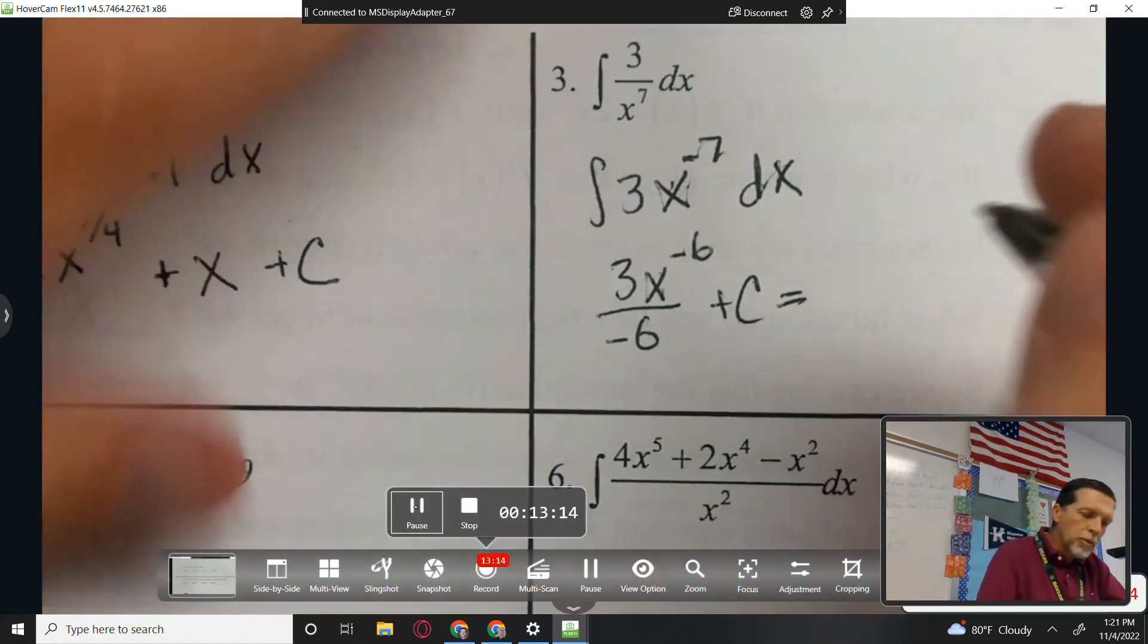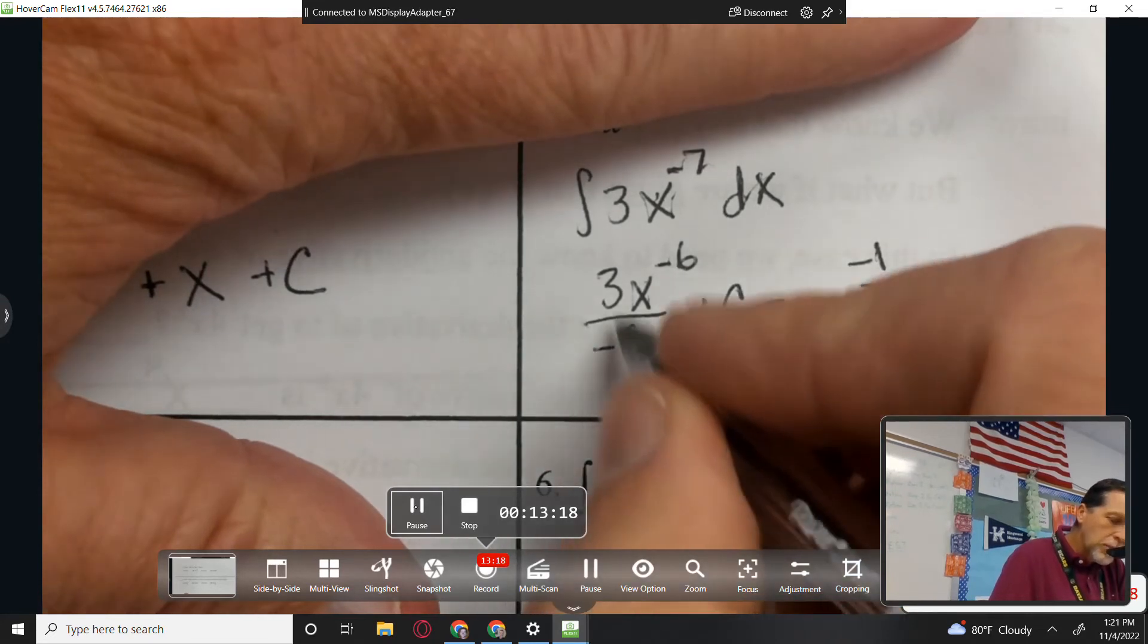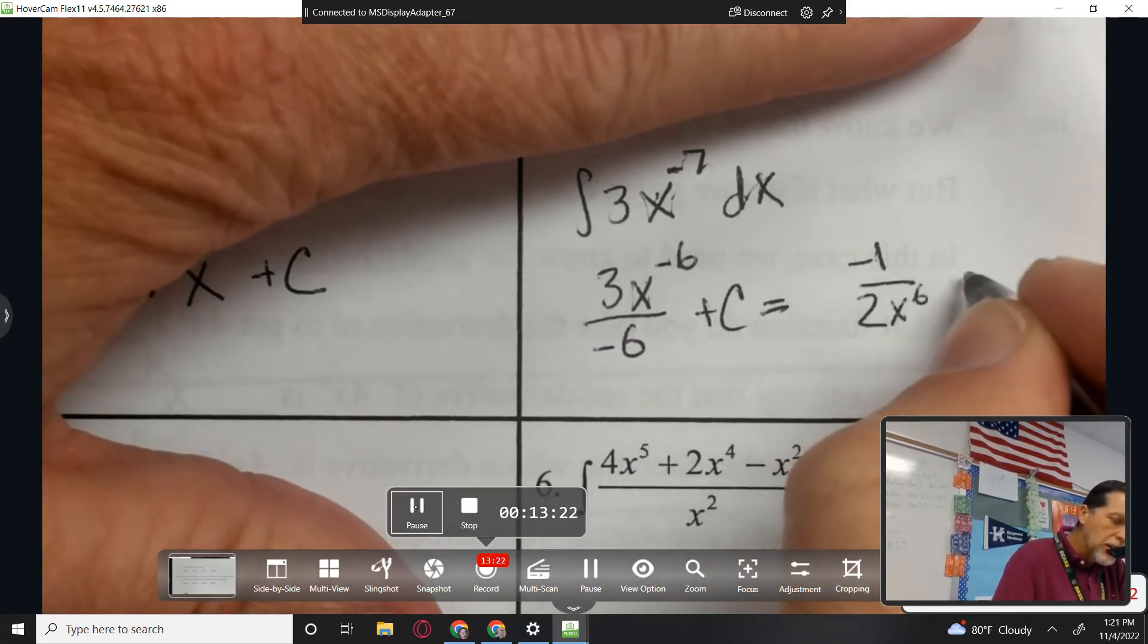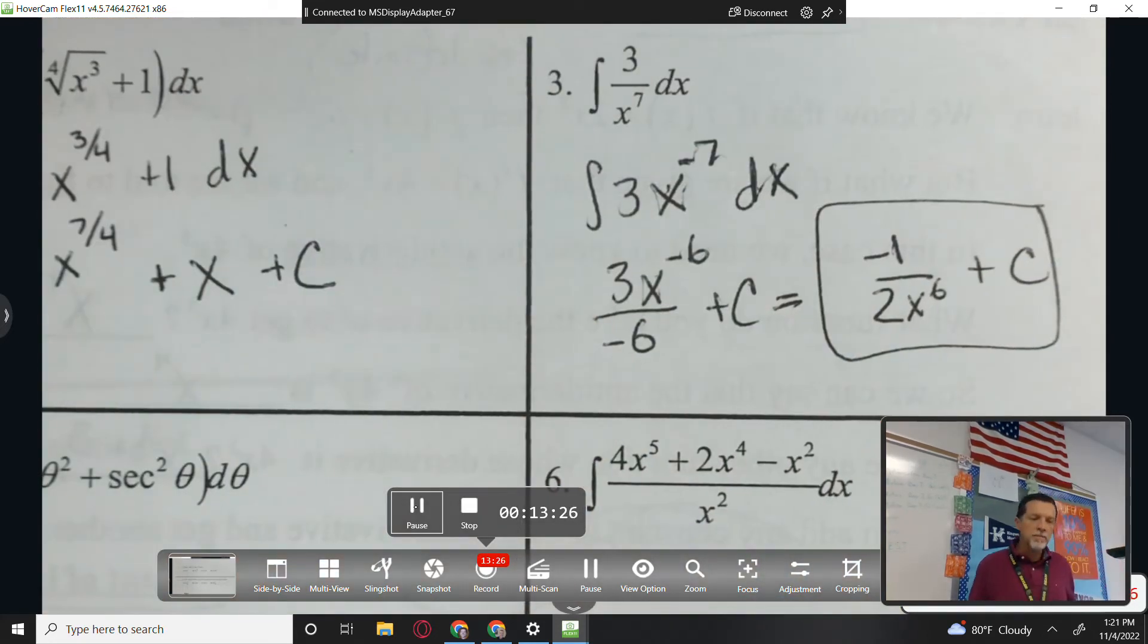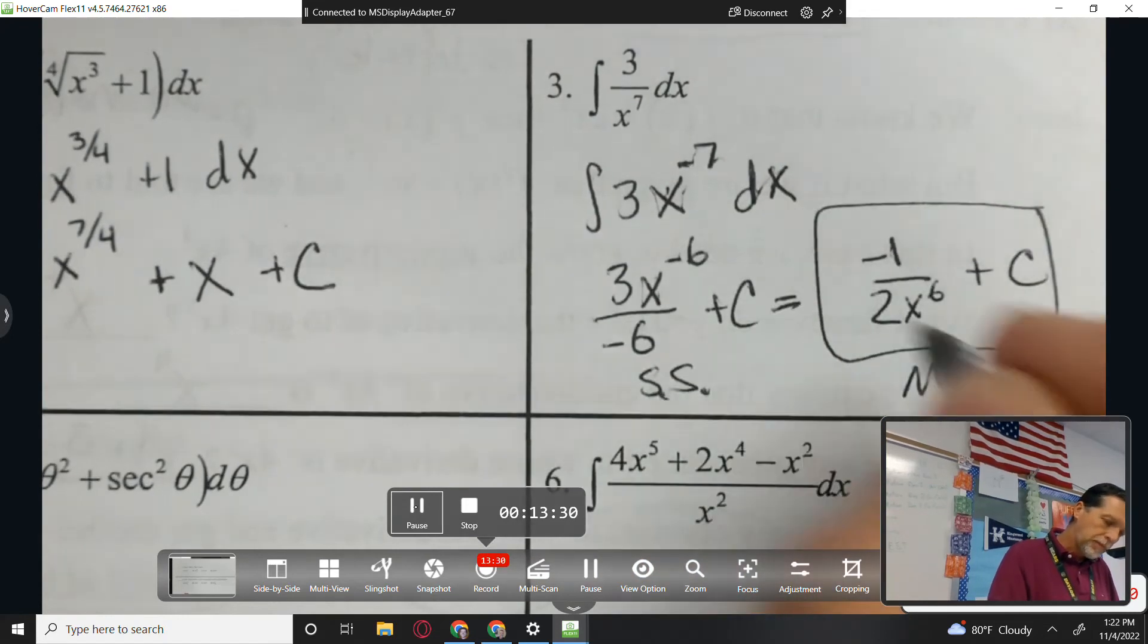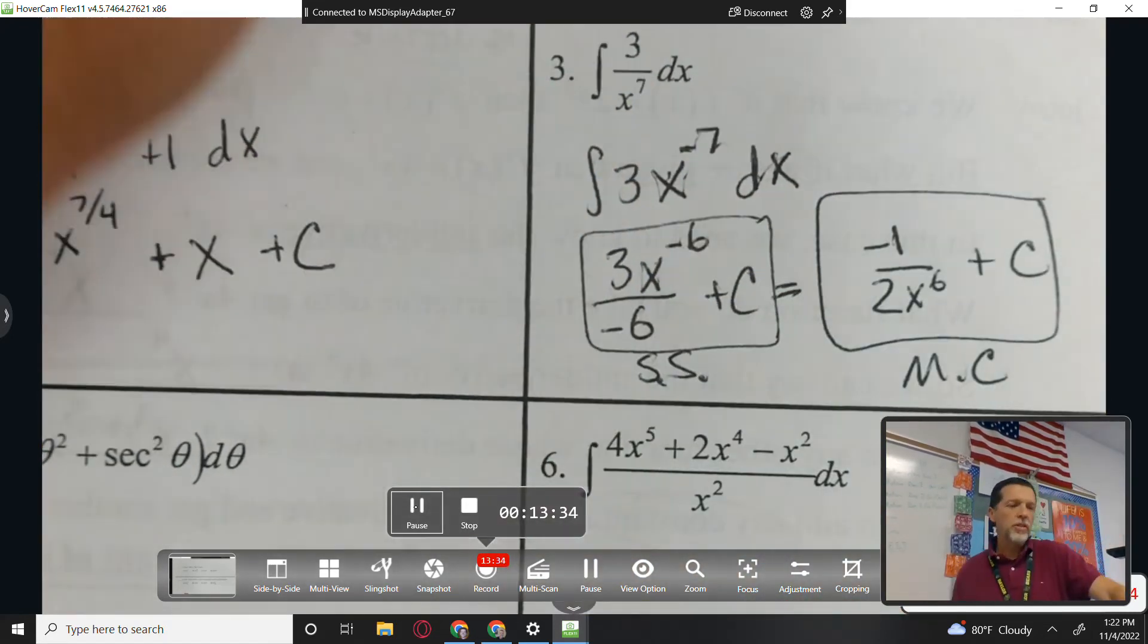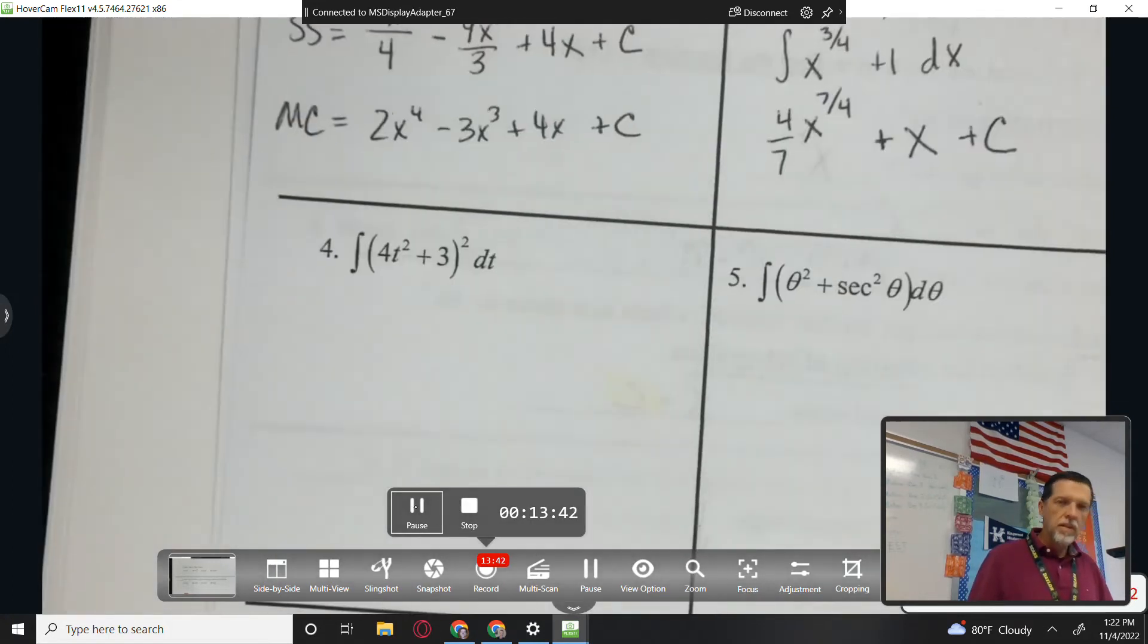But a multiple-choice answer is probably going to put the negative up top, simplify it to one-half, put the x in the bottom. So a lot of cleanup work on that one. It doesn't have to be done for a safe stop, but it definitely has to be done, or would need to be done, for a multiple-choice answer.